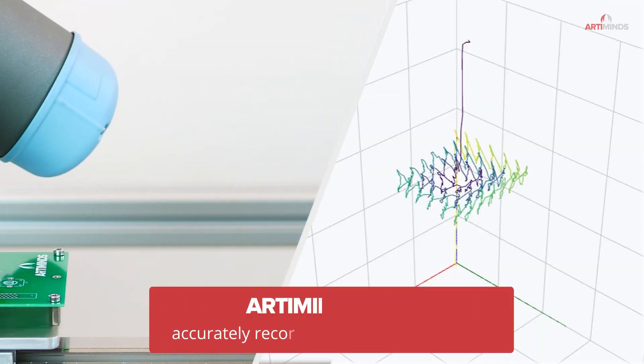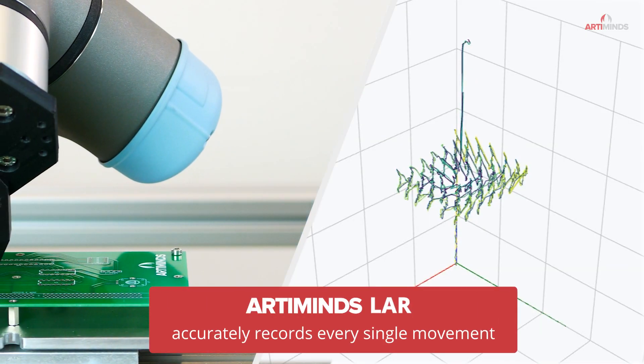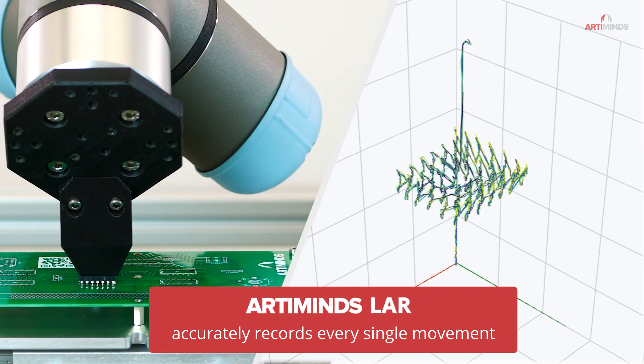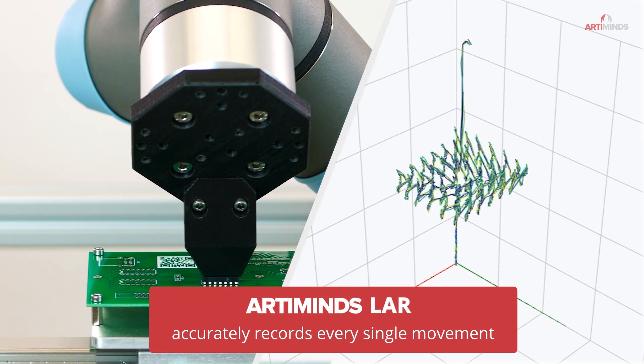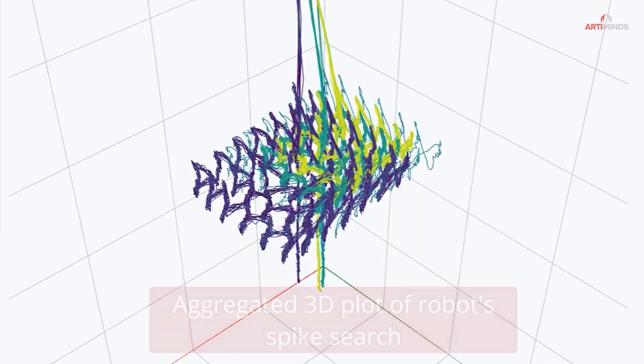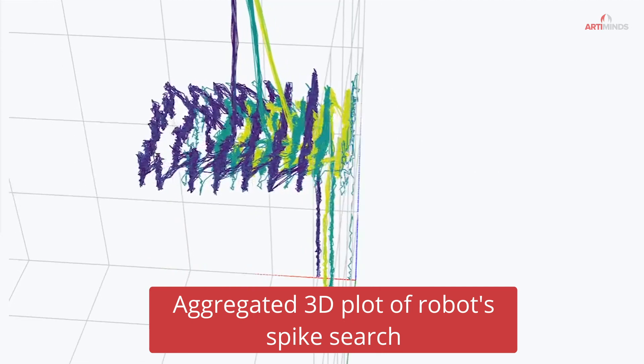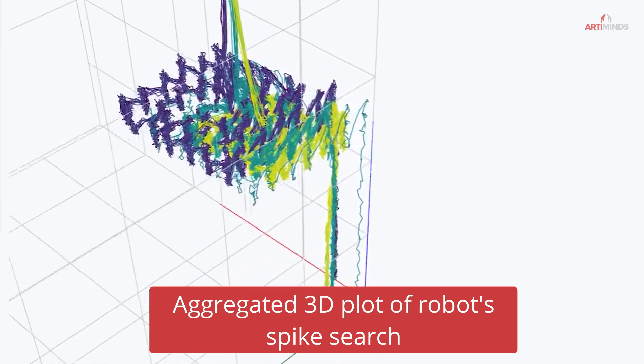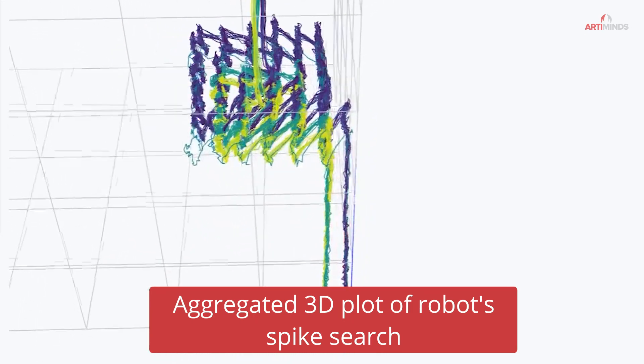ArtiMinds LAR helps by accurately recording every single robot movement as well as sensor data during program execution. The acquired data can be visualized easily in various plots, as for example in this 3D plot of the robot's spike search aggregated over the recorded runs.